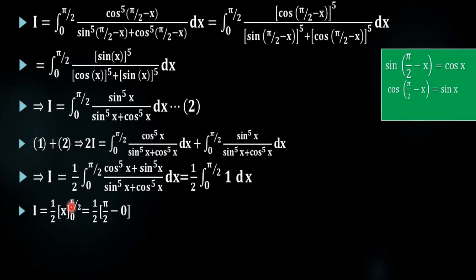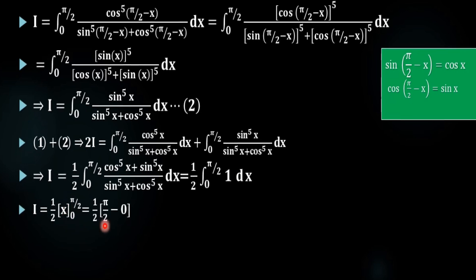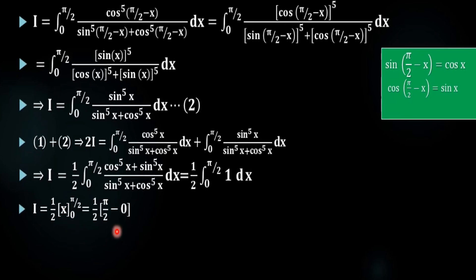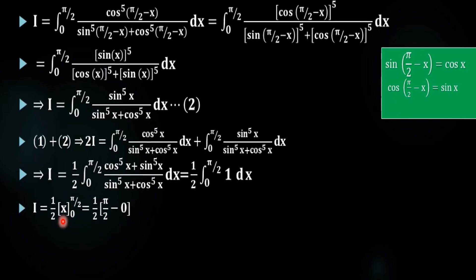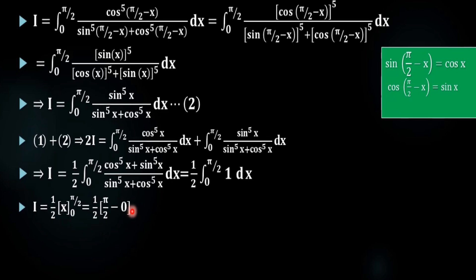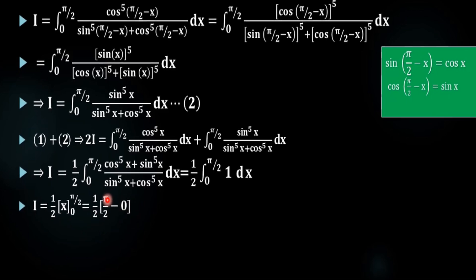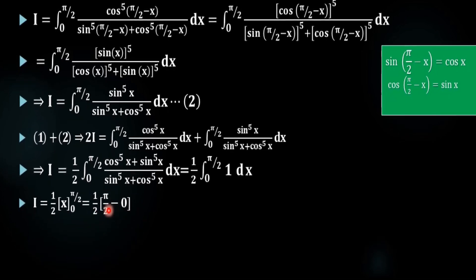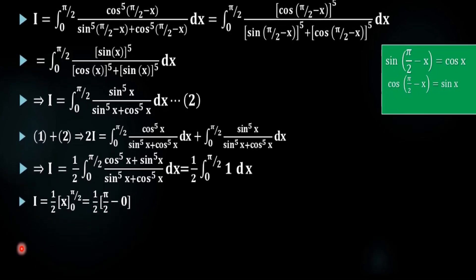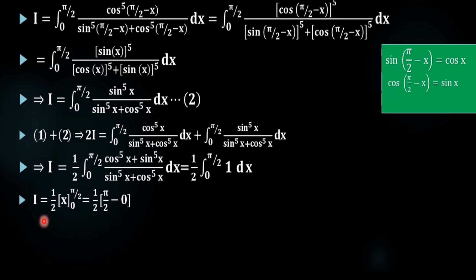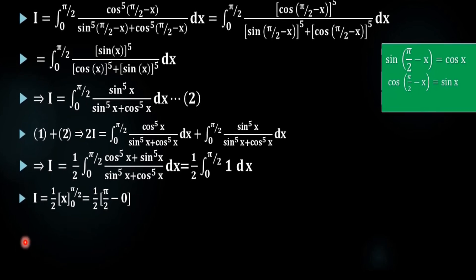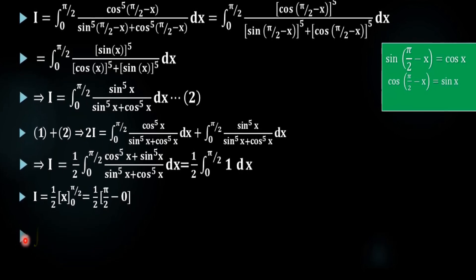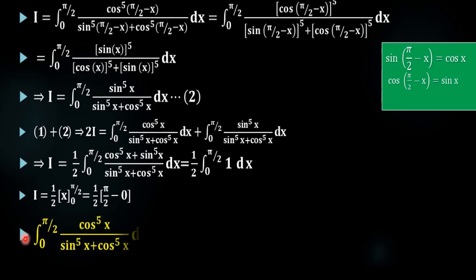We apply the limit from 0 to π/2. Substituting x equals π/2 gives π/2, and substituting x equals 0 gives 0. So we have i equal to one half times (π/2 minus 0). Therefore i equals π/4.